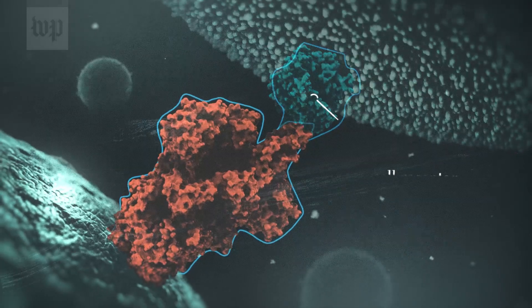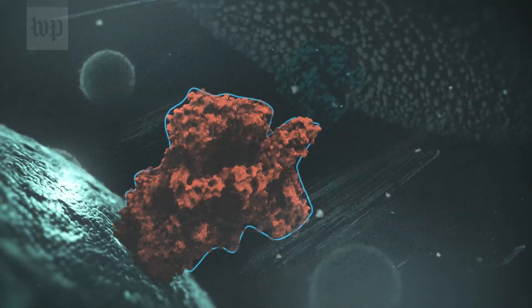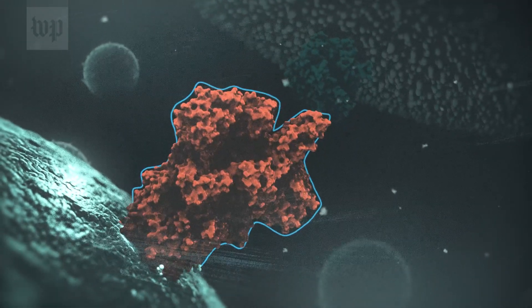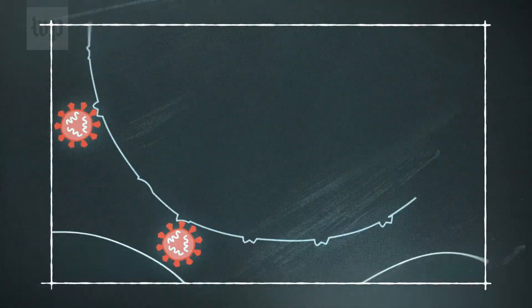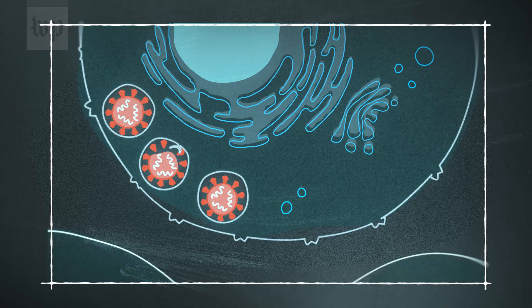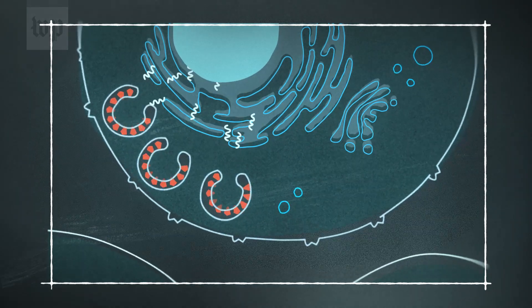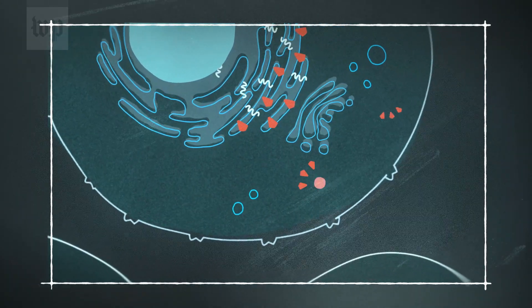And like any clever thief, it disguises itself by changing the physical appearance of the protein and masking it with a coat of sugars to trick our immune system. When the entrance is unlocked, the virus is free to deposit its genetic material and set up shop replicating itself.